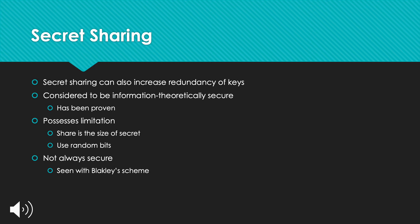Secret sharing also possesses limitations. The share must be equal to the size of the secret, due to the threshold. As there are T-1 shares, no information can be determined about the secret, so the share must include as much information as the secret possesses. Secret sharing also utilizes random bits — if a secret is one bit and needs to be shared with T number of people, then T-1 random bits are necessary. This scheme is also not always secure, as is seen in Blakely's scheme.